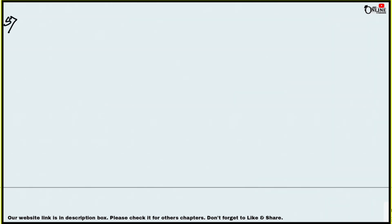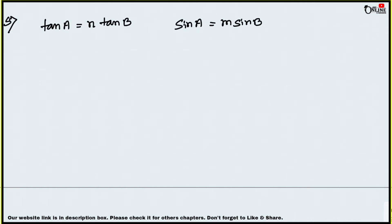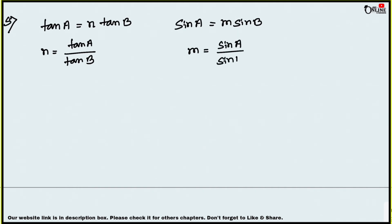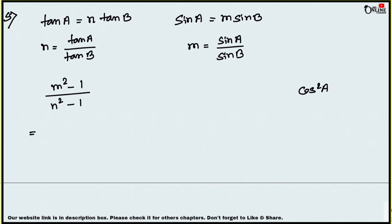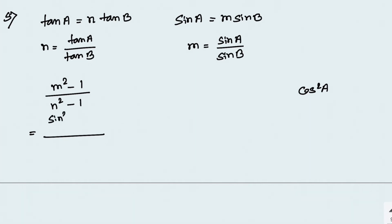Sum number 5: given that tan a = n tan b and sin a = m sin b, prove that (m² - 1)/(n² - 1) = cos²a. From the given conditions, n = tan a / tan b and m = sin a / sin b.